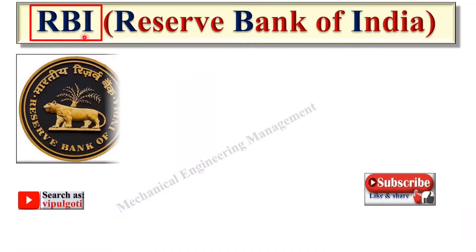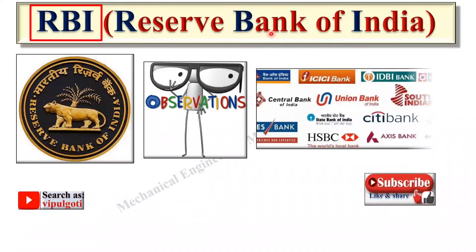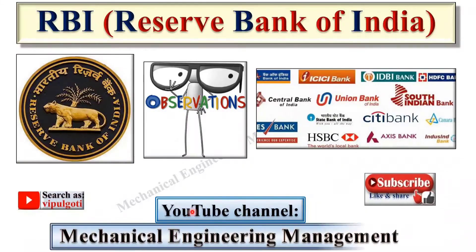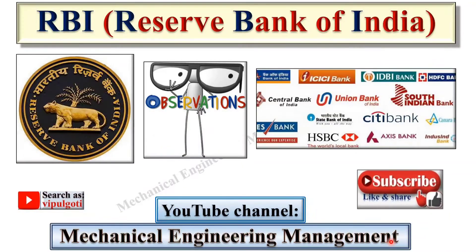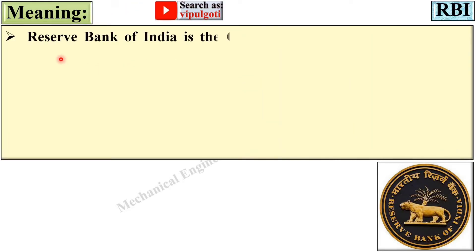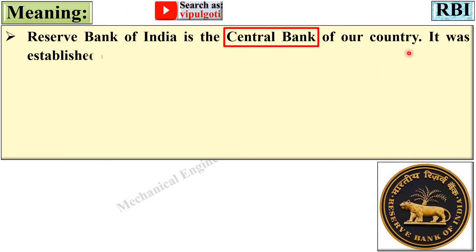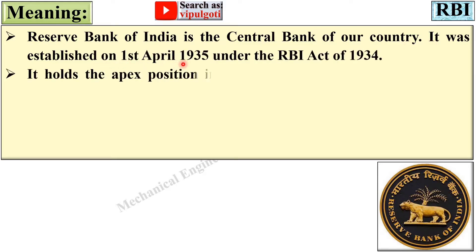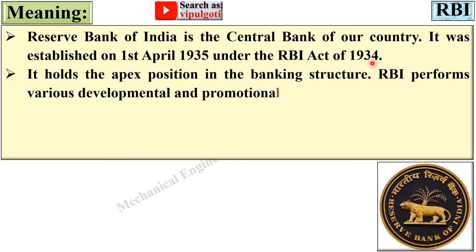Today I am going to explain RBI, that means Reserve Bank of India. First of all, let's see the meaning of RBI. The Reserve Bank of India is the central bank of our country, India. It was established on 1st April 1935 under the RBI Act of 1934. RBI is the central bank of India.